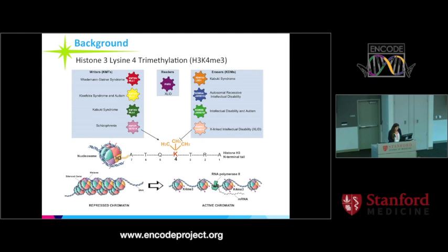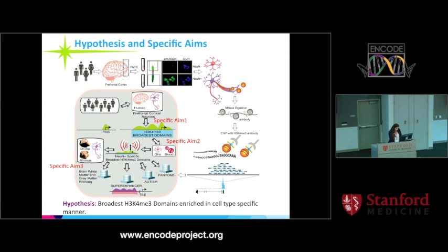Many of the mutations in H3K4me3 regulation are linked to neurodevelopmental disorders such as schizophrenia and intellectual disability. I am investigating broad H3K4me3 domains in the prefrontal cortex by performing genome-wide mapping of H3K4me3 in neuronal and non-neuronal nuclei from control and disease post-mortem brain. Our hypothesis is that epigenetic dysregulation at non-coding regulatory regions may play a key role in cell identity in health and disease states. For cell-type specificity, we used fluorescence-activated cell sorting of fresh-frozen post-mortem tissue — dissected from the prefrontal cortex — and used the NeuN antibody. The sorted neuronal nuclei were then subjected to micrococcal nuclease digestion to obtain mono-nucleosomal DNA and ChIP-seq for H3K4me3.